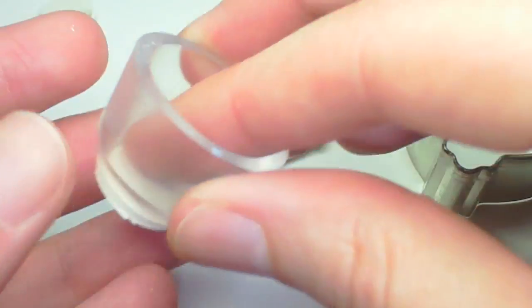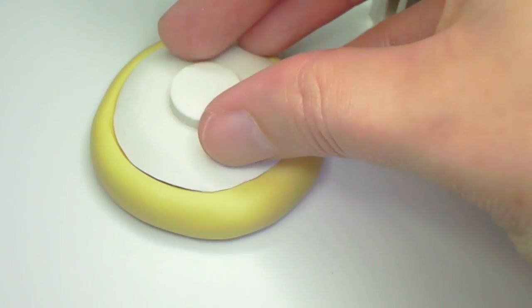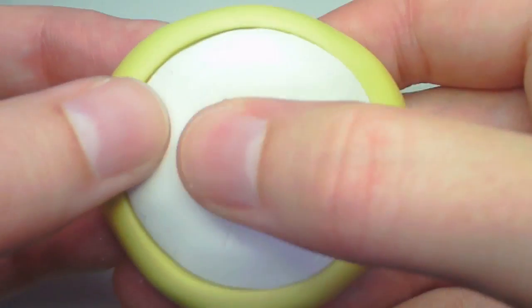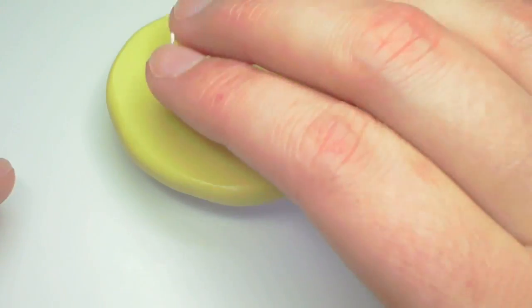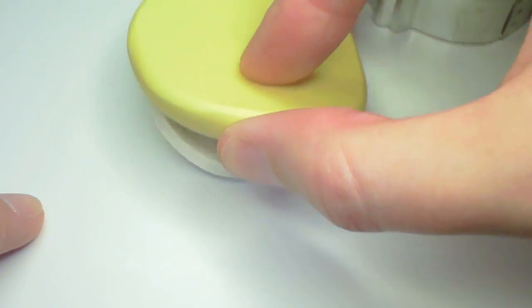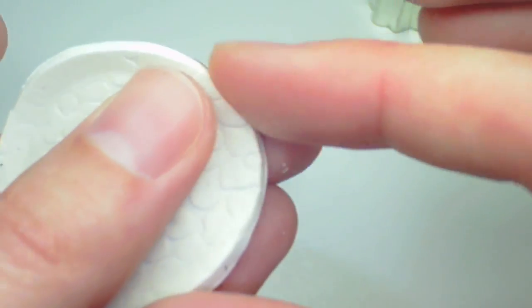Then use a smaller circle cutter and cut out. It could be the same thickness or a little thinner. Press down and it should release from the mold pretty easily, and use your fingers to smooth out the edges.